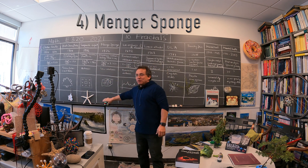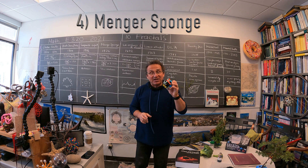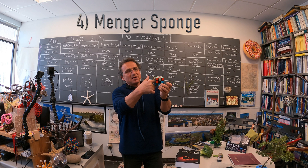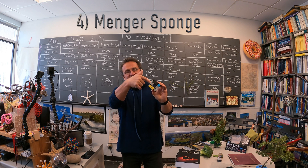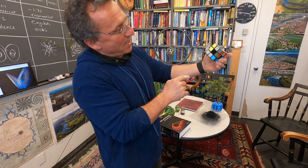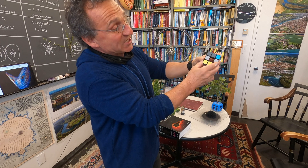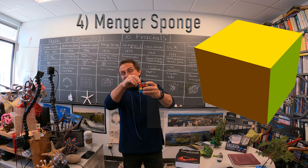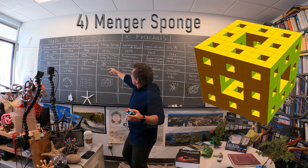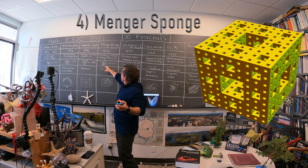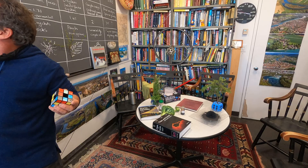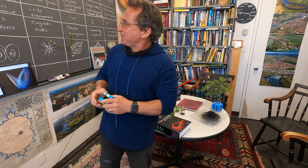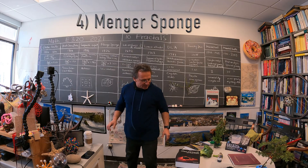The Menger Sponge is a very beautiful object too. It has dimension between 2 and 3. You take a cube and cut away the middle parts, tunneling through it, and you end up with a cube that now has 20 little cubes. Then you do the same thing with each of those cubes. The dimension is log 20 over log 3, which is approximately 2.7 — a little bit below 3.